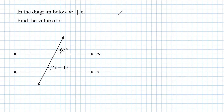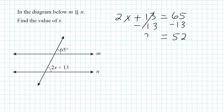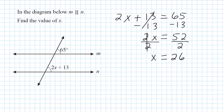So we know that 65 degrees will be equal to this equation. We're going to write an equation that shows they are equivalent: 2x plus 13 is equal to 65. Writing this equation was dependent on knowing that we have corresponding angles and that corresponding angles are equivalent. So we're going to isolate x — first we subtract 13 from both sides, leaving us with 2x equals 52, then divide both sides by 2, leaving us with x equals 26.